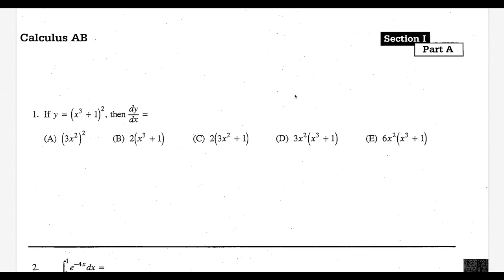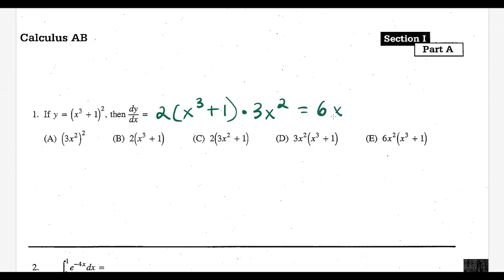What's up, I'm Vin and today I want to go through the 2003 Calc AB Multiple Choice No Calculator section. Let's get started. For this first question we're doing the chain rule. We're going to do the derivative of the outside using power rule, so we have 2 times x to the third plus 1 to the first, keep the inside the same, and multiply by the derivative of the inside which is 3x squared. That gives us 6x squared times x to the third plus 1, which matches choice E.